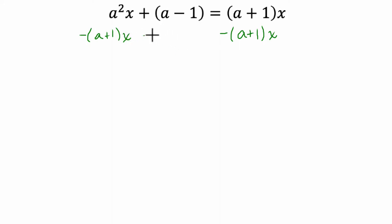And I also want to move this term out of the way, minus a minus 1 on both sides. Now, I'm not going to really calculate anything here, I'm just going to kind of shuffle things around. We have a squared x minus a plus 1 times x, and then these cancel out, plus a minus 1 minus a minus 1.